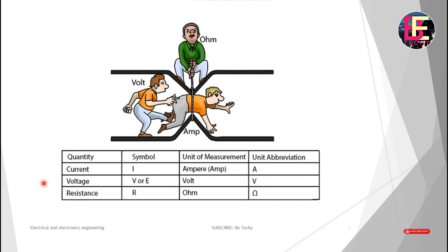Now let's look at voltage, current, and resistance together. Voltage is the force. Current flows through the conductor. Resistance opposes the current. The value of current depends on the voltage and the resistance.